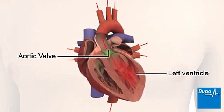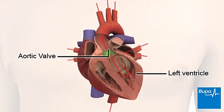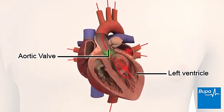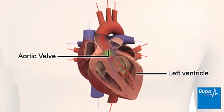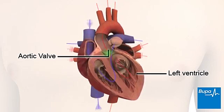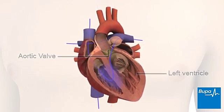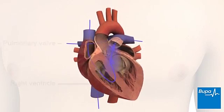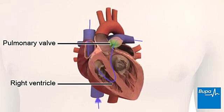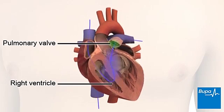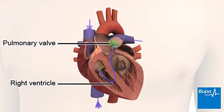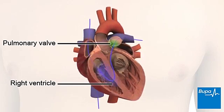The valve at the exit of the left ventricle, the aortic valve, stops blood passing back into the ventricle. The pulmonary valve at the exit of the right ventricle also stops blood flowing backwards.